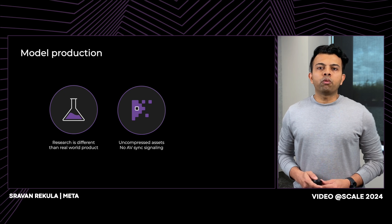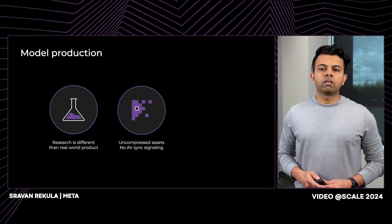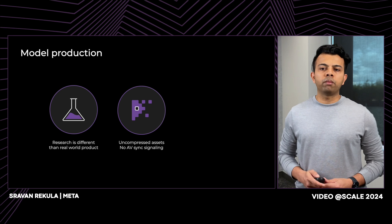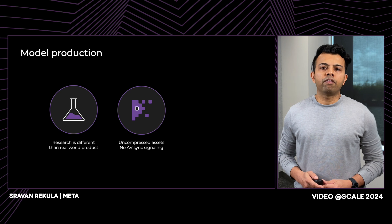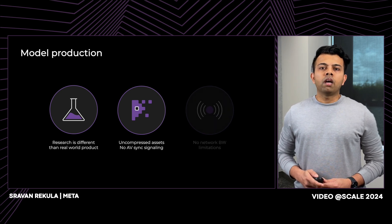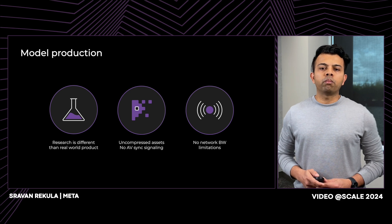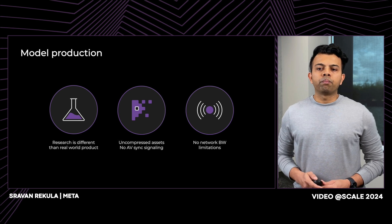Model orchestration in production is a complex process as it involves multiple models and steps. To avoid quality degradation, decoded and uncompressed frames are passed between various models. We had to carefully design the interfaces and workflows to avoid out-of-memory issues. Unlike in the lab, network is a shared resource in production. We had to ensure we are not bogging down the network by sending uncompressed frames, which necessitated building streaming interfaces.